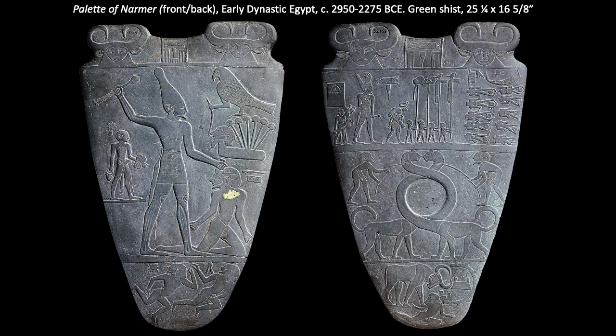The intertwining of the fantastical long-necked creatures in the next register embodies the unification of Upper and Lower Egypt. In the bottom register, Narmer is again shown as a bull — he bows his head towards a fortified city and tramples over an enemy. The back of the palette features a large scene in which the pharaoh, wearing the white crown that symbolizes Upper Egypt, prepares to club an enemy who kneels before him. The falcon behind him represents the god Horus, suggesting that Narmer was supported by the gods.